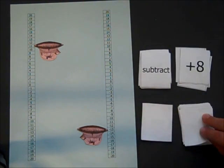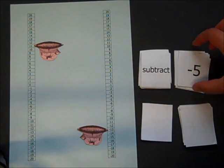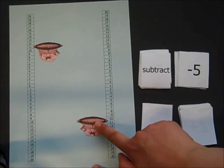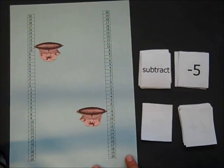I'm going to subtract negative 5. Oh, this is good. I take out 5 sandbags, so that means that I'm going to move up. 1, 2, 3, 4, 5. Your turn.